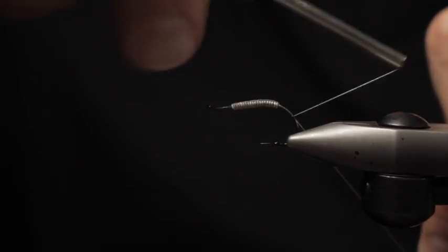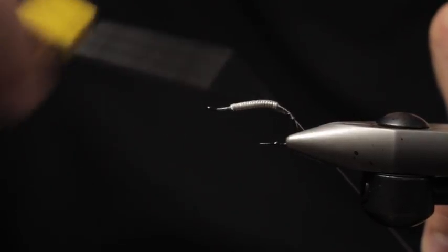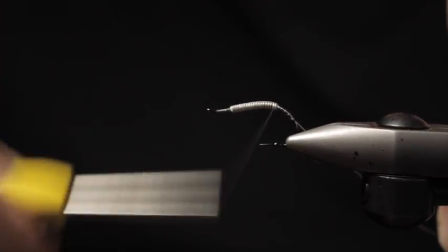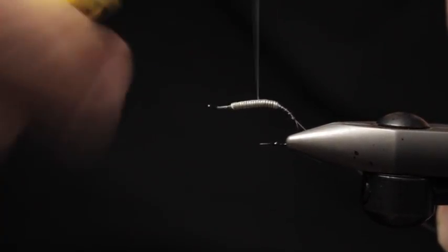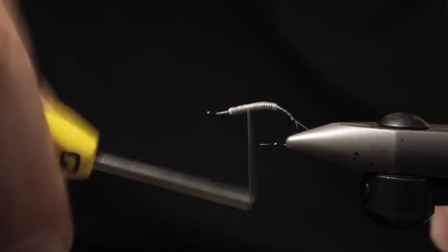You can see I'm wrapping back over the top of my tag, and that keeps your thread from slipping in on the initial pass there. So it'll help you kind of lock everything in and sandwich that non-lead wire in.